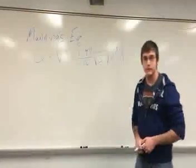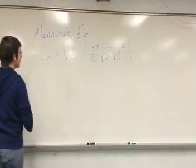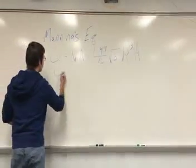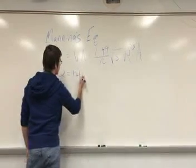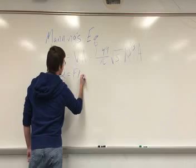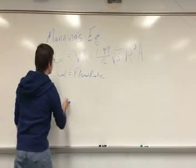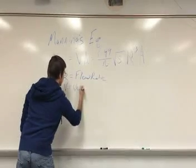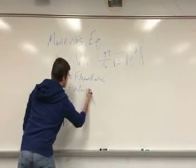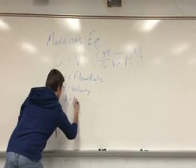So here's our Manning's equation. We have several variables: we have Q, which is the flow rate, we have V, which is velocity, A, area.